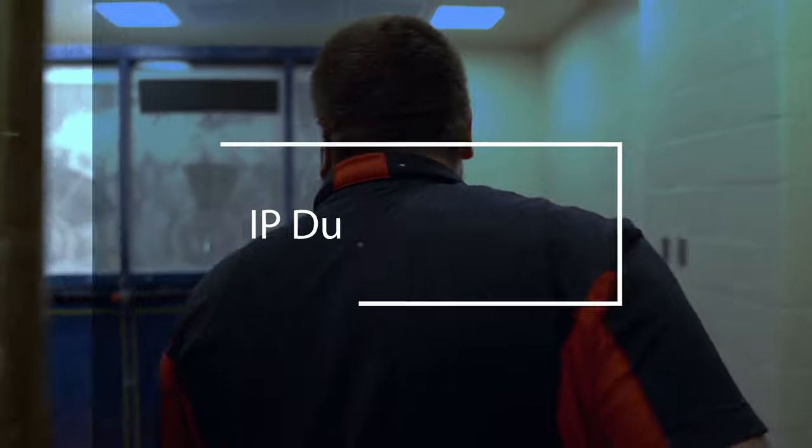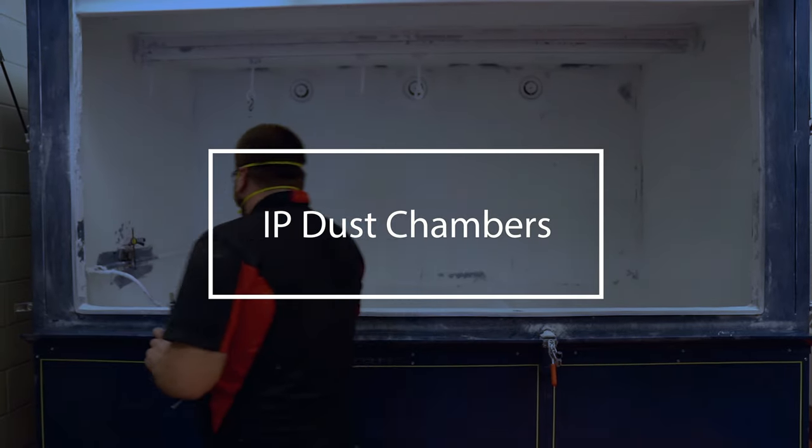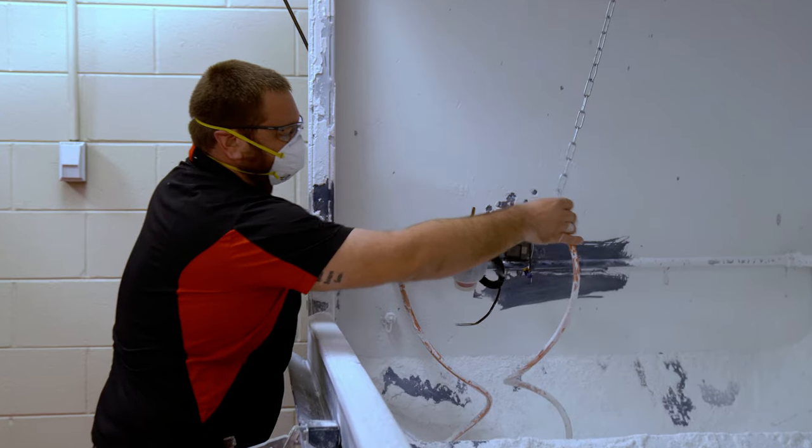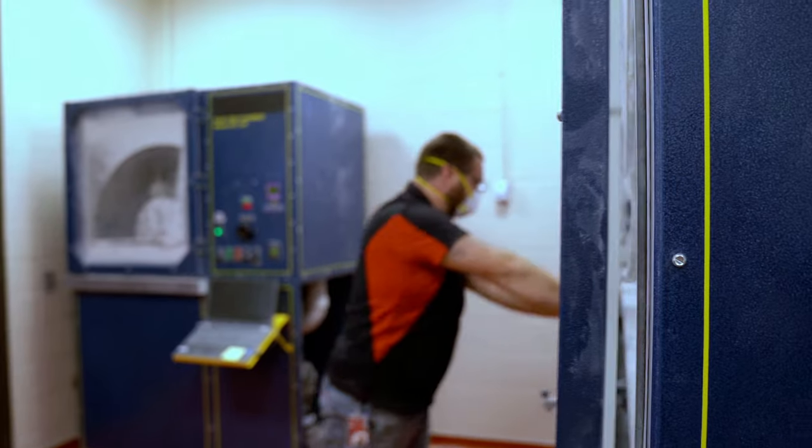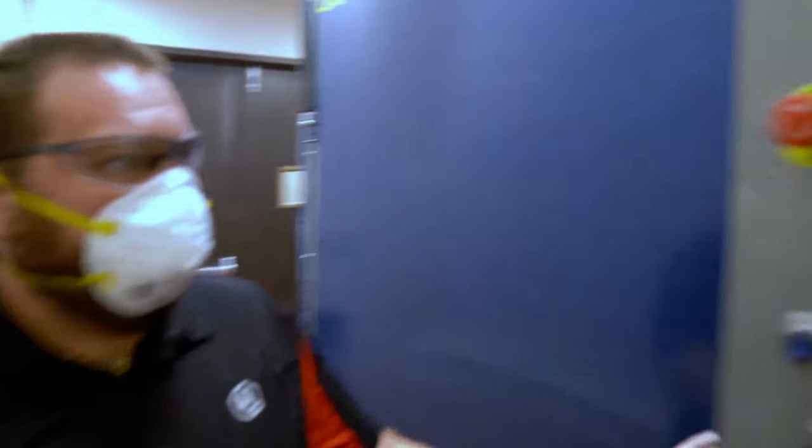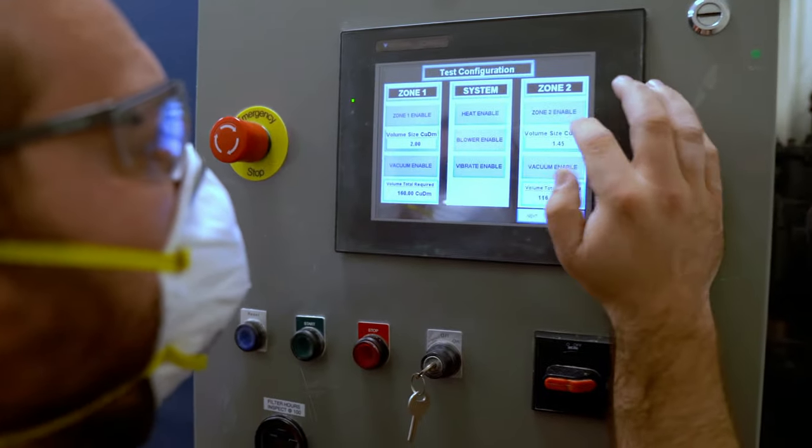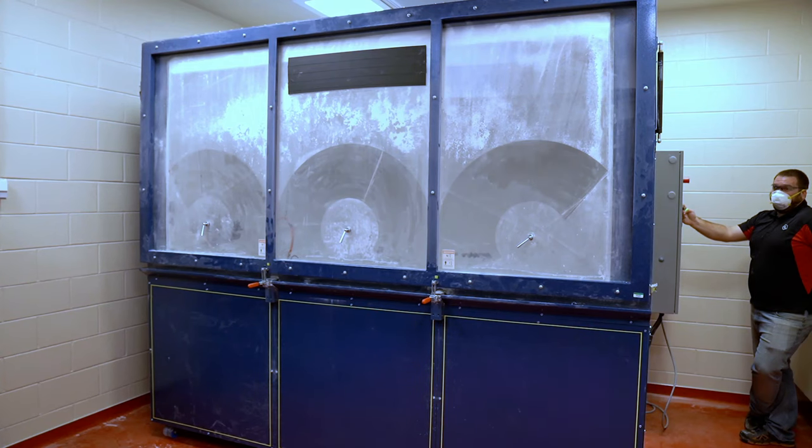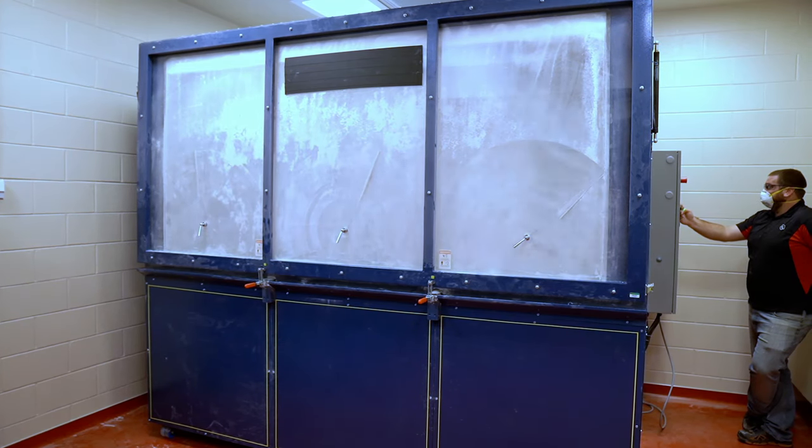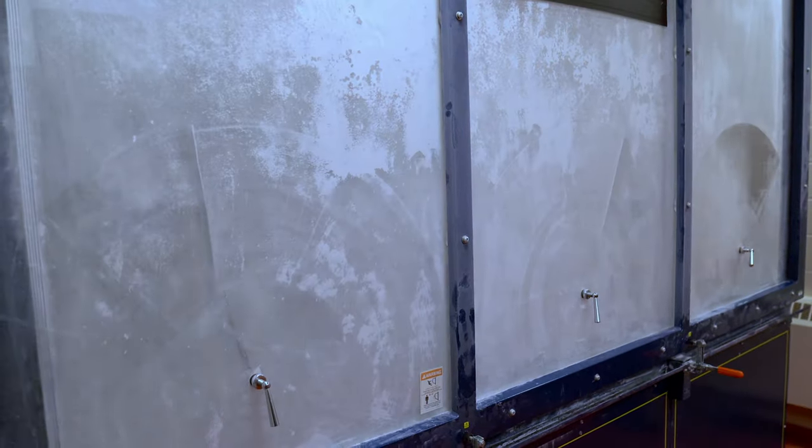Our automated IP dust chambers allow us to test for penetration of dust into enclosures and luminaires. The various sizes of chambers available accommodate equipment up to five cubic meters in size. The automated chambers efficiently run from two to eight hours to complete the test. The automation built into the process decreases unnecessary downtime or additional setup, thereby resulting in faster turnaround time.